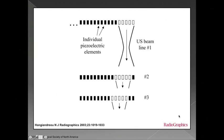This is the best current architecture for ultrasound transducers. Many of our transducers, even if they have a curved surface, actually have a linear array of crystals that are just bent along that curved surface. Curvilinear and linear transducers generally give us the best resolution over sector and vector transducers.